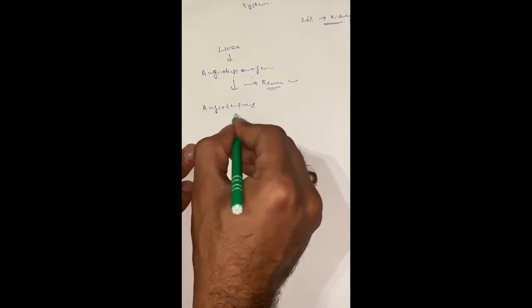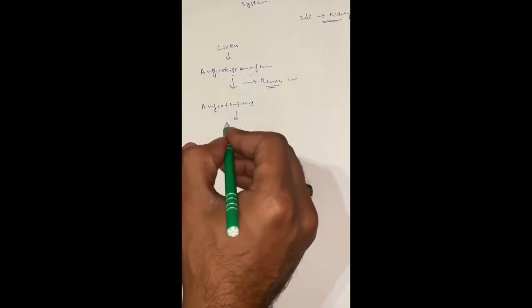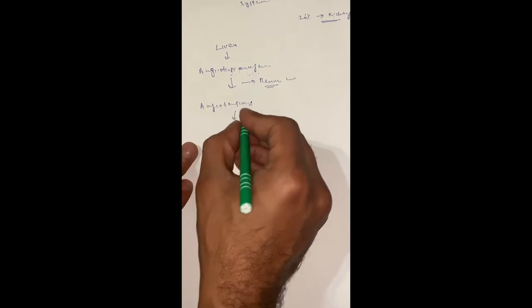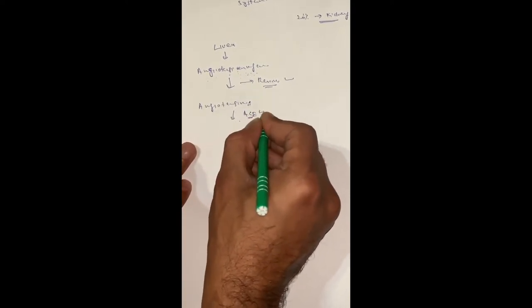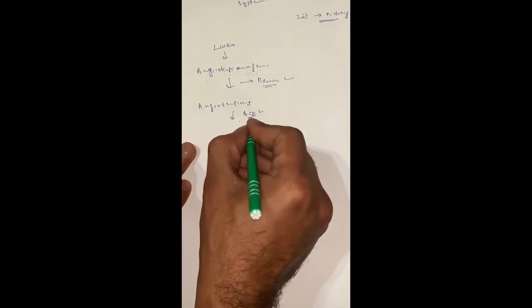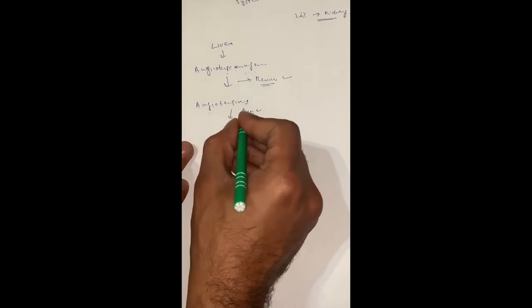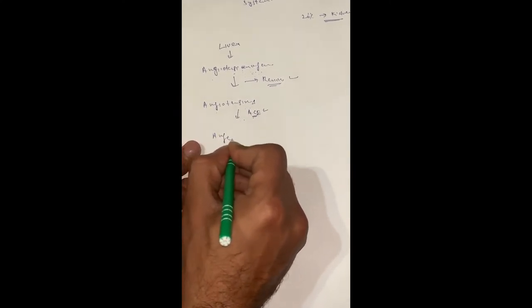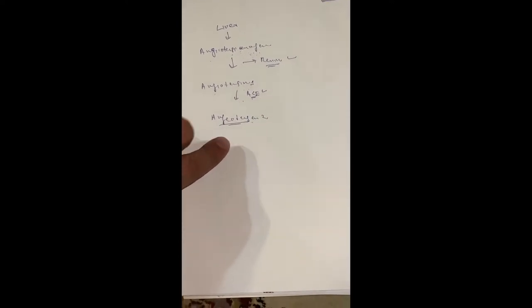When angiotensin I enters into the lungs, there is an enzyme present known as angiotensin-converting enzyme (ACE). This angiotensin-converting enzyme causes the conversion of angiotensin I into angiotensin II.